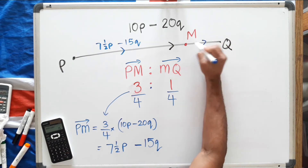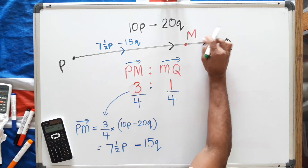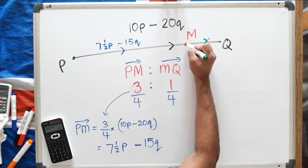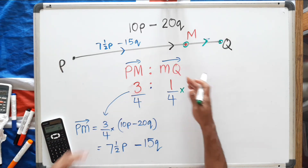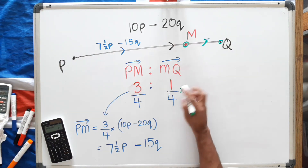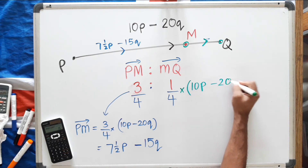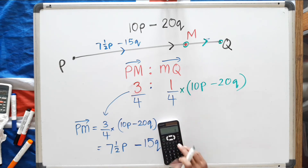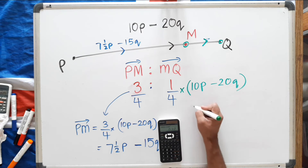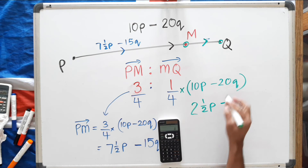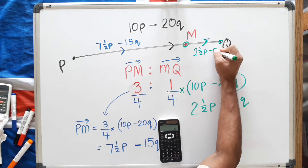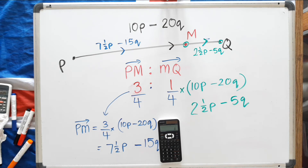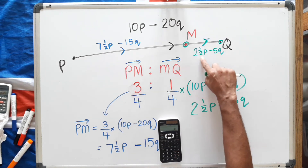Now let's find MQ — from M to Q. MQ is only a quarter of the entire line, so MQ equals a quarter multiplied by the entire vector PQ, which is 10p minus 20q. A quarter times 10p is 2 and a half p, and a quarter of 20 is 5. So MQ equals 2 and a half p minus 5q. That is the value from M to Q.